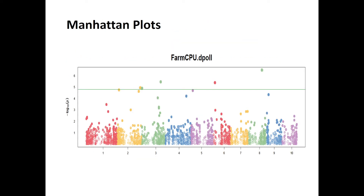Your GWAS results can also be summarized using Manhattan plots. On the x-axis are the chromosomes — here we have 10 chromosomes. On the y-axis are the hits. There is a threshold line, and whatever is above that threshold is a significant SNP that has an association.